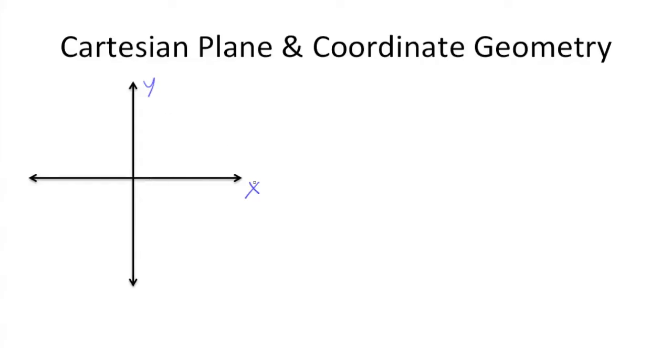Positive values for x are over here on the right, negatives are over here on the left like a normal number line. The y-axis is similar except that it's vertical, so positive values are up here, negative values are down here.